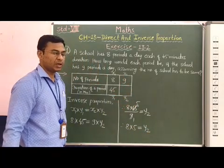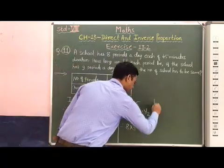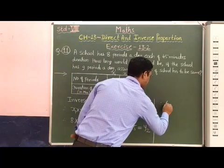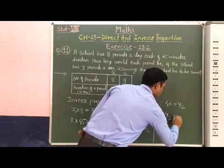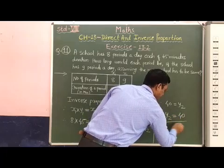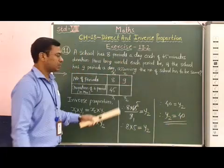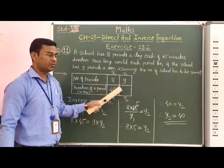8 × 5 are 40, therefore we can write 40 = y2. y2 = 40. We can write 40 here in the table.